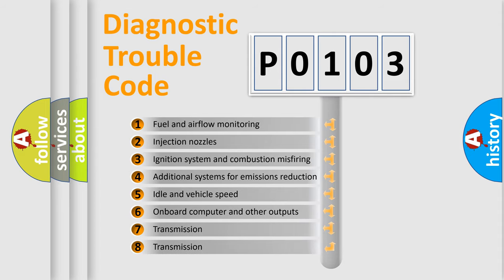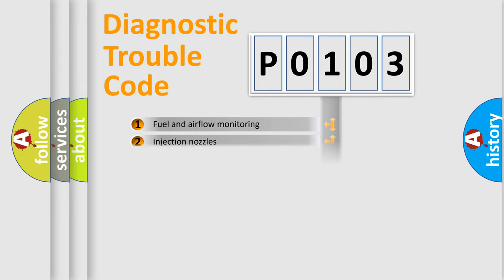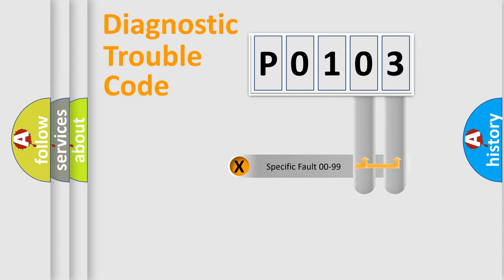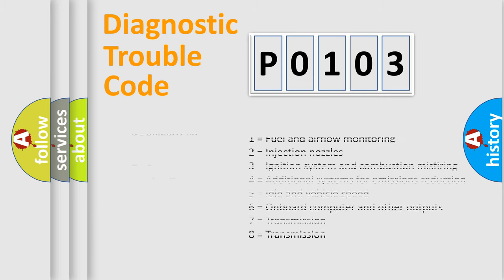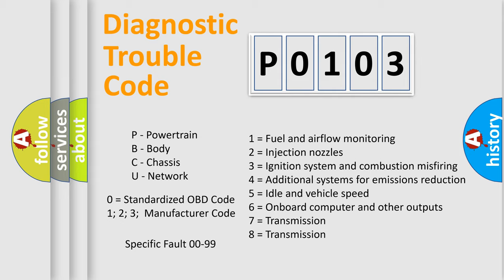The distribution shown is valid only for the standardized DTC code. Only the last two characters define the specific fault of the group. Let's not forget that such a division is valid only if the other character code is expressed by the number zero.